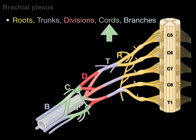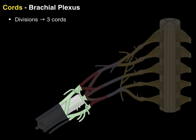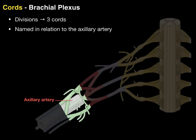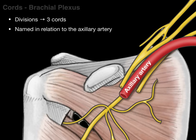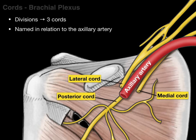Next, we'll talk about cords. The divisions give rise to three cords, named in relation to the axillary artery. There's our axillary artery, and there's a lateral and medial cord named in their relationship to this axillary artery. Deep to it is the posterior cord. There is our axillary artery — lateral is the lateral cord, medial is the medial cord, and deep is the posterior cord.